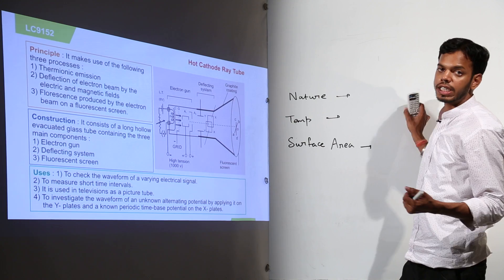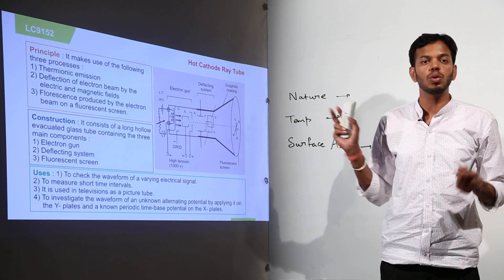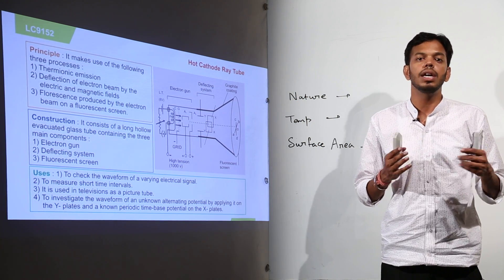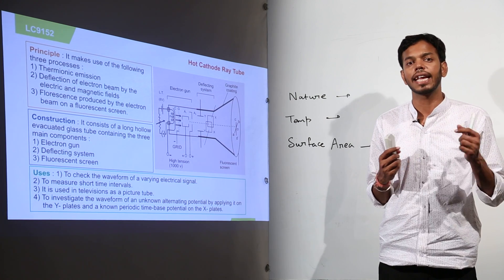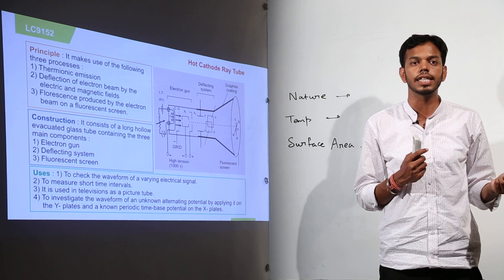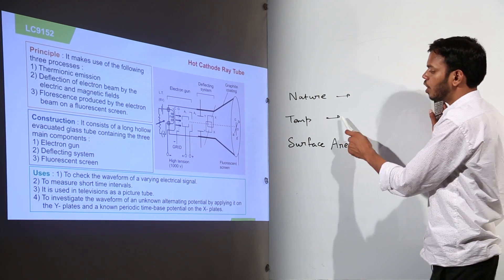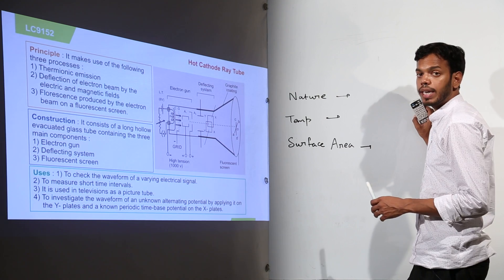Then, the temperature of metal obviously. If in that experiment 2000 degree Celsius was attained for the tungsten filament, it is not important that it can work in the same way at 1500 degree Celsius. So, temperature of metal. Lastly, the surface area of metal.